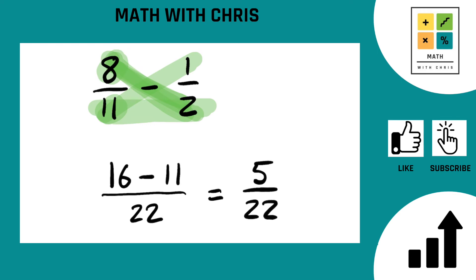This fraction 5/22, 5 22nds cannot be simplified. It's simplified already. That means it is finished. And we're done with the problem already.